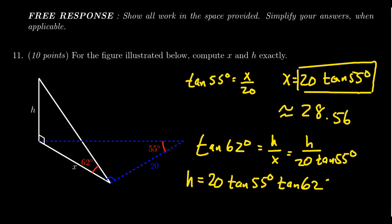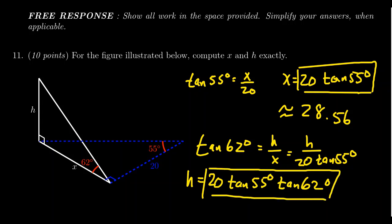For full credit on this question, you need the exact answer, which looks like H equals 20·tan(55°)·tan(62°). If you want an approximation of H, you can put it into your calculator and get approximately 53.719.